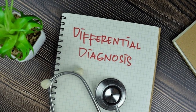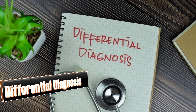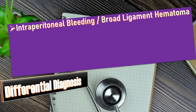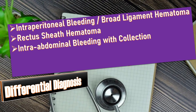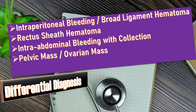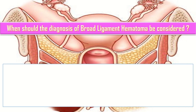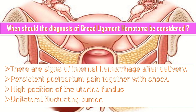After history and examination, the differential diagnoses to consider include intraperitoneal bleeding, broad ligament hematoma, rectus sheath hematoma, intra-abdominal bleeding with collection, pelvic or ovarian mass, and pelvic abscess. The diagnosis of broad ligament hematoma must be considered whenever there are signs of internal hemorrhage after delivery, persistent postpartum pain with shock, high position of the uterine fundus, or a unilateral fluctuating tumor on examination.